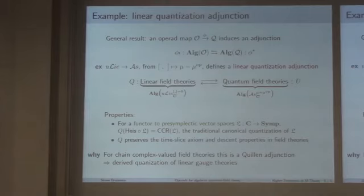For example, if you take two operads, the unitary Lie operad and the associative operad, and we take a map that corresponds to taking a Lie bracket and interpreting it as multiplication minus opposite multiplication, we get a linear quantization adjunction between linear field theories, which are algebras over this unitary Lie operad, where commute means the Lie bracket is zero, and algebras over the associative operad, where by commute we mean what we usually mean by commute, which is that the multiplication is equal to the opposite multiplication.